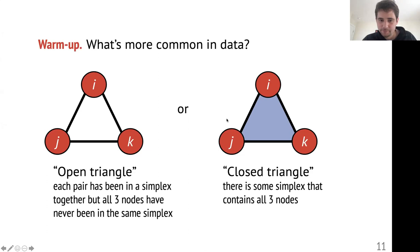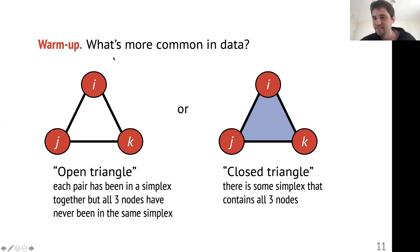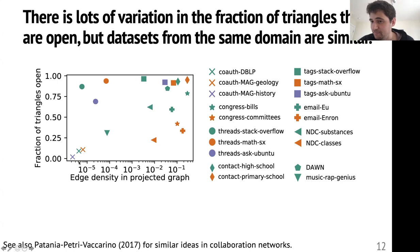There are guesses for both closed and open — participation is excellent. As always, this is a trick question. In academia, the answer is always that it depends on the data. In some datasets, we see nearly all triangles are closed — this is very common in co-authorship data. But if you look at something like tags on various Stack Exchange forums, nearly all of the triangles are open. We don't have great explanations for why this is happening, but it's an interesting jumping-off point.